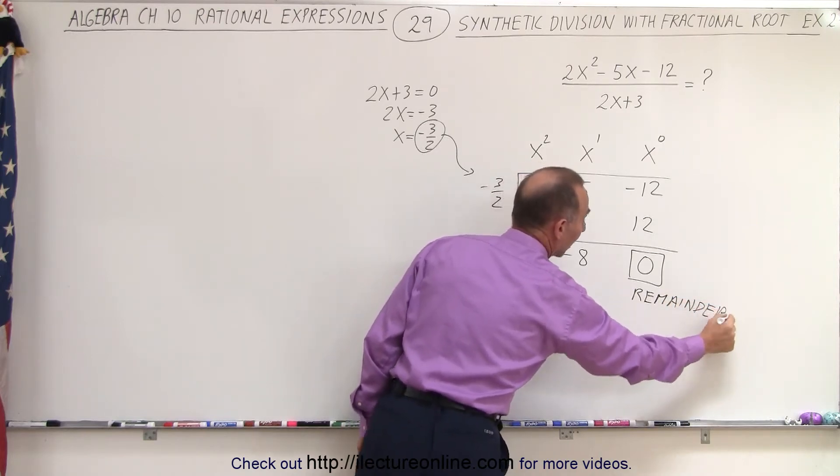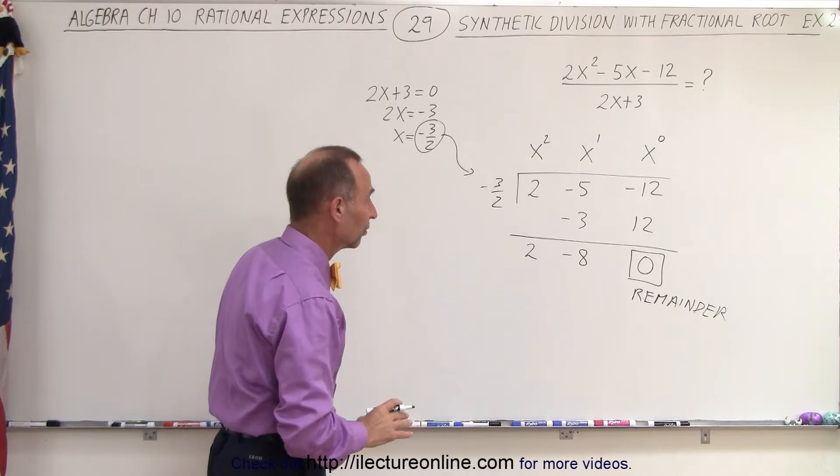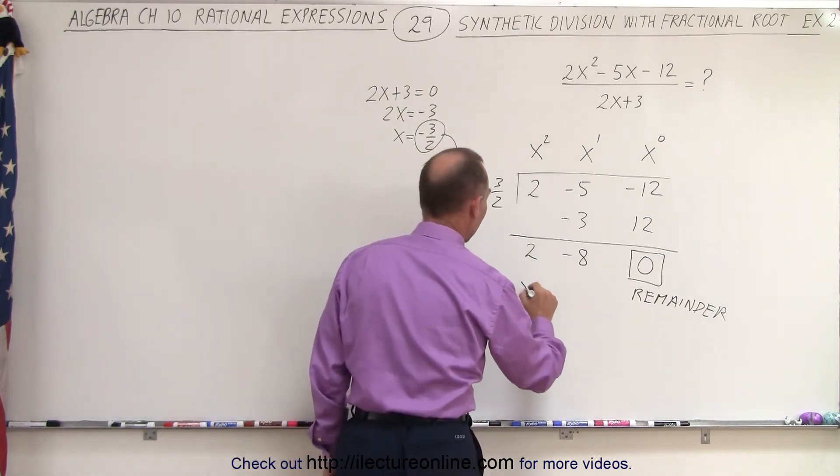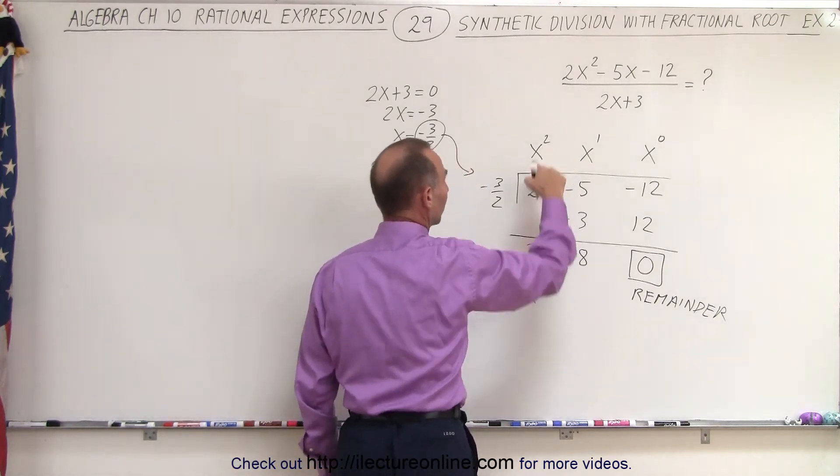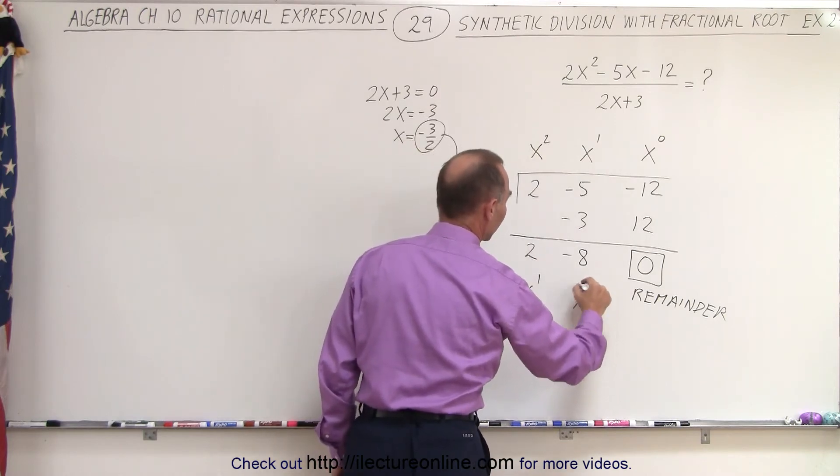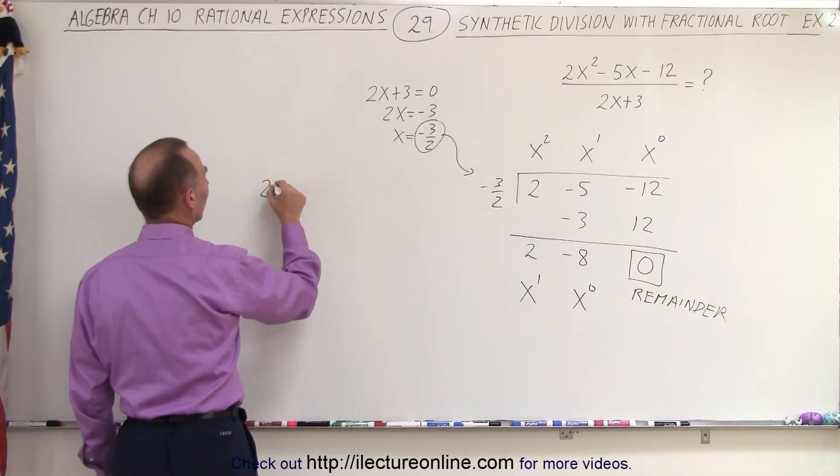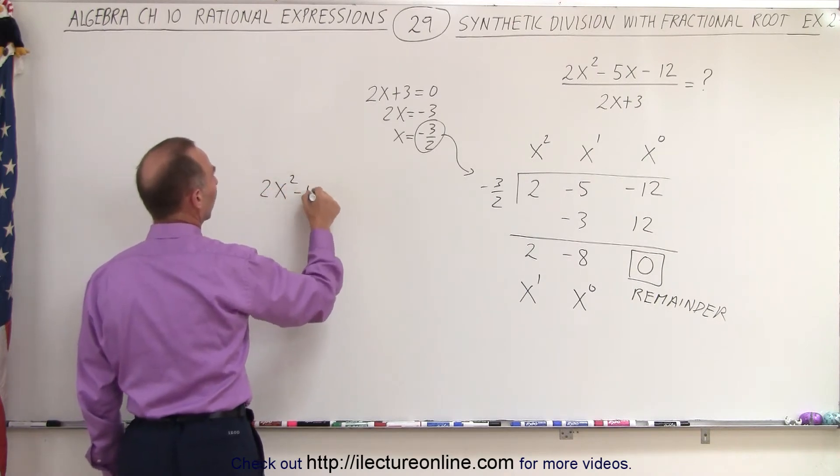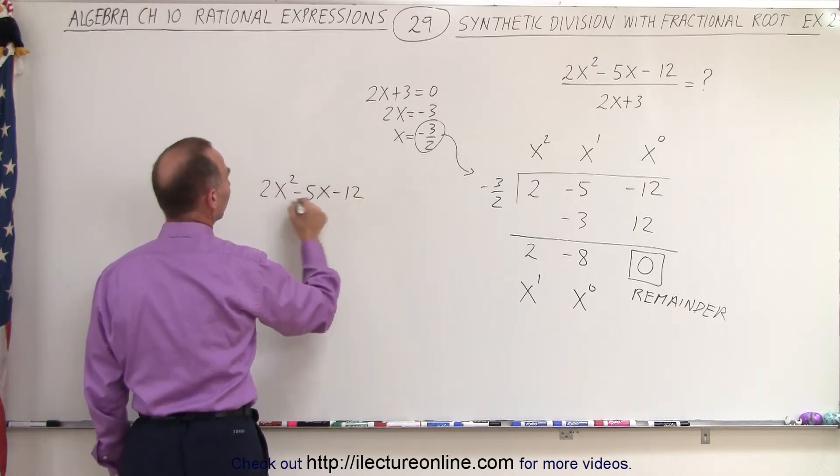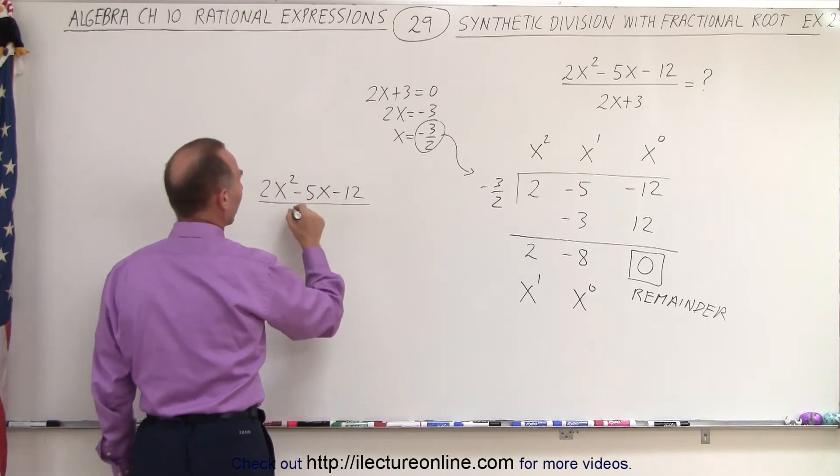Which means that we have an exact factor for this. Again, this represents the x to the first term, which is 1 less than the exponent that we had over here, and this represents the x to the 0 term. So now what we can say is that 2x squared minus 5x minus 12 divided by x minus 3 over 2.